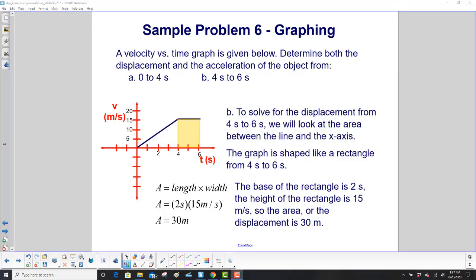Part B. Solve for the displacement from 4 seconds to 6 seconds. So what's the area between the line and the x-axis? Well, there it is. It's shaped like a rectangle from 4 to 6 seconds.